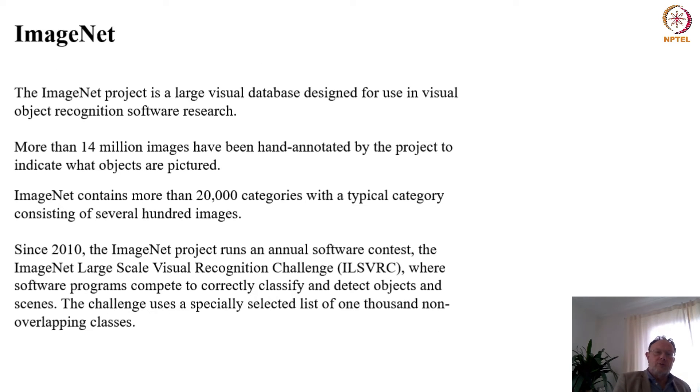As a parenthesis, I want to mention the ImageNet project. The ImageNet project is a large visual database designed to be used as a tool for object recognition software development and research. More than 14 million images have been hand-annotated by the project, and this database contains more than 20,000 categories of objects and in general hundreds of images representing individuals from these categories.